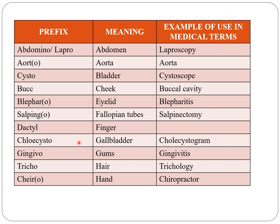Dactyl indicates finger. Cysto indicates bladder, and cholecysto indicates gallbladder — cysto means bladder while chol means gall. Remember: cysto indicates bladder, cholecysto indicates gallbladder.